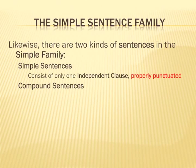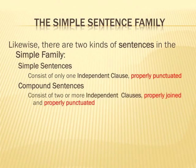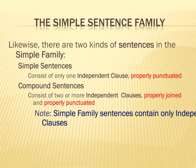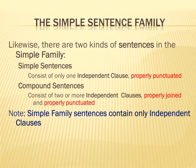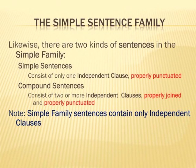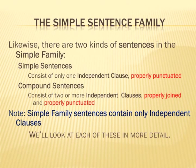Simple sentences consist of only one independent clause, properly punctuated — that's the period at the end and the capital at the beginning. Compound sentences, on the other hand, consist of two or more independent clauses, properly joined and properly punctuated. Simple family sentences contain only independent clauses. We'll talk more about dependent clauses when we get to the complex family, but for now, simple family sentences have only independent clauses.